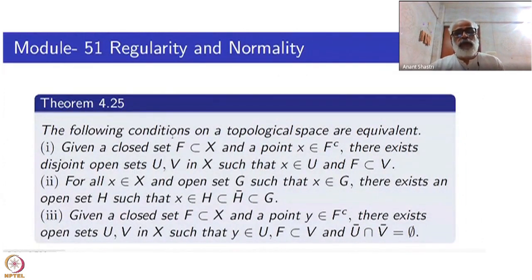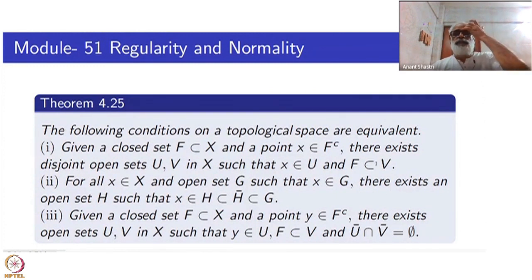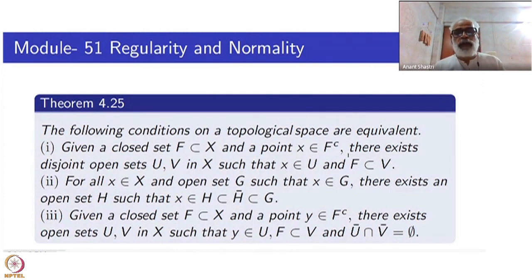This theorem says the following conditions on a topological space are equivalent. Given a closed set F and a point X away from F (in the complement), there exist disjoint open sets U and V in X such that X is inside U and F is contained inside V. Just like Hausdorff space — where any two points are separated — here a point and a closed set are separated by open sets. You can see that this is a one-step generalization of regularity.